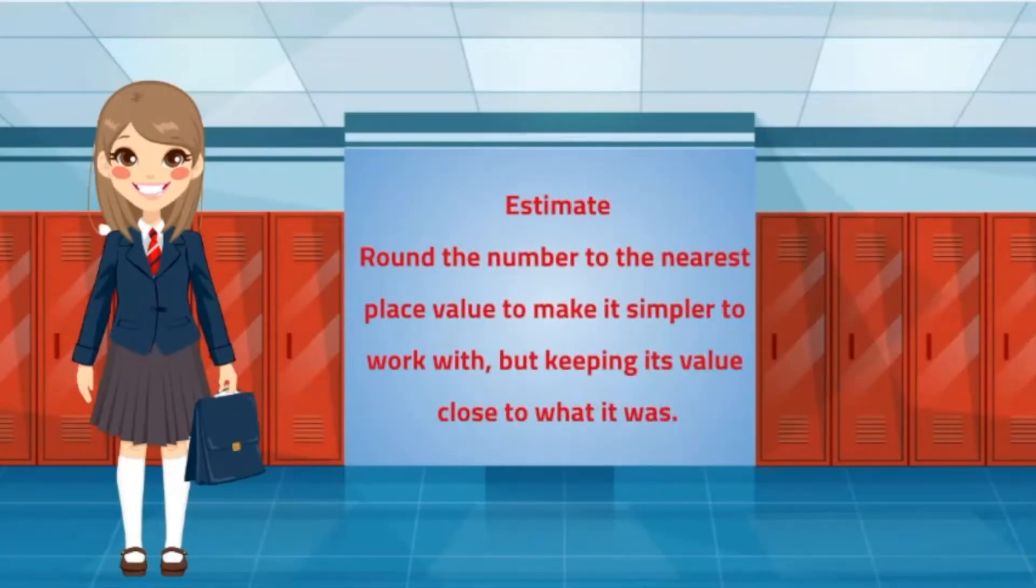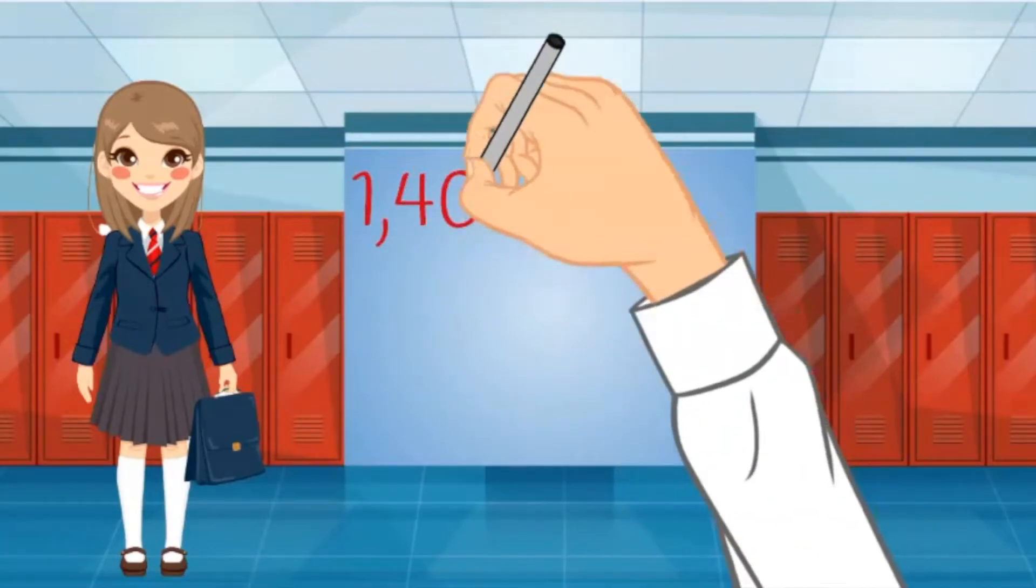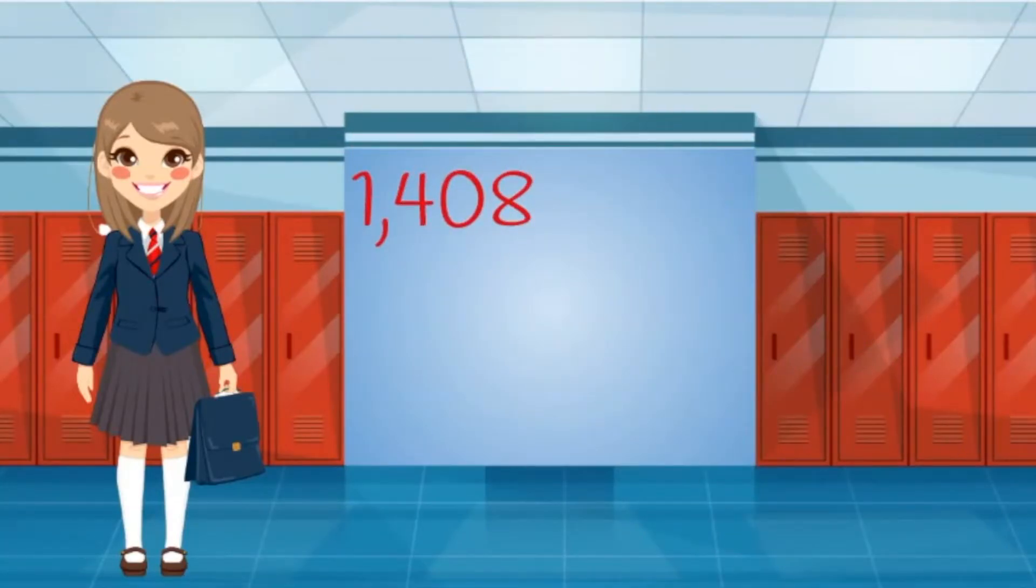We are expecting a crazy number of kids, so I want to have 1408 cookies for snacks. Cookies come in packs of 22 each, so I need to divide 1408 by 22 to determine how many packs to buy.